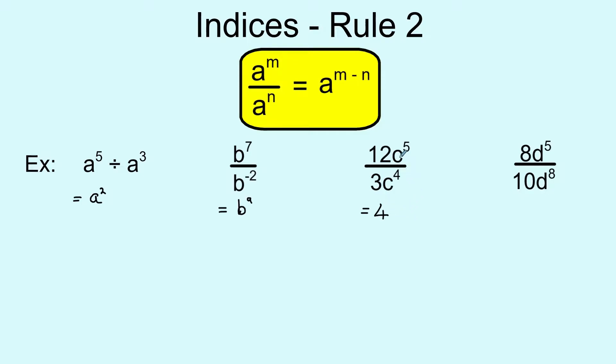Here we're moving on to the c to the power 5 and c to the power 4. Dividing using division rule 2 means we subtract the powers, so we get c to the power 5 take away 4, which is 1. We wouldn't really write that as 4c to the power 1, that would just be 4c. Anything to the power 1 is just the term on its own, so 4c would be our final answer there.